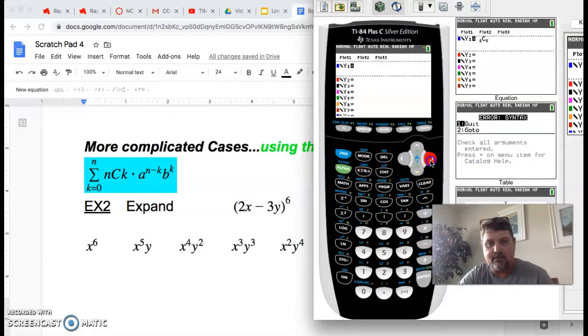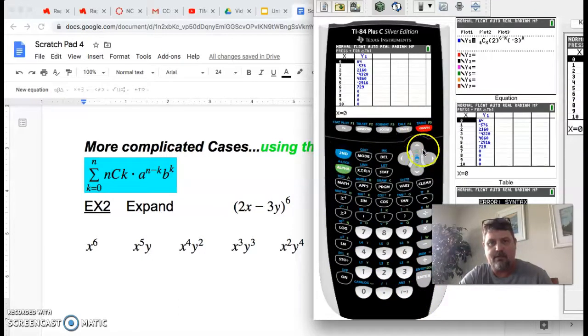and your b right here, the number part of b is negative 3, and we can put that in. negative 3, close it, raise it to the x, because k is x, and that should work. And let's see what we get when we go to the table, and there's my coefficients.